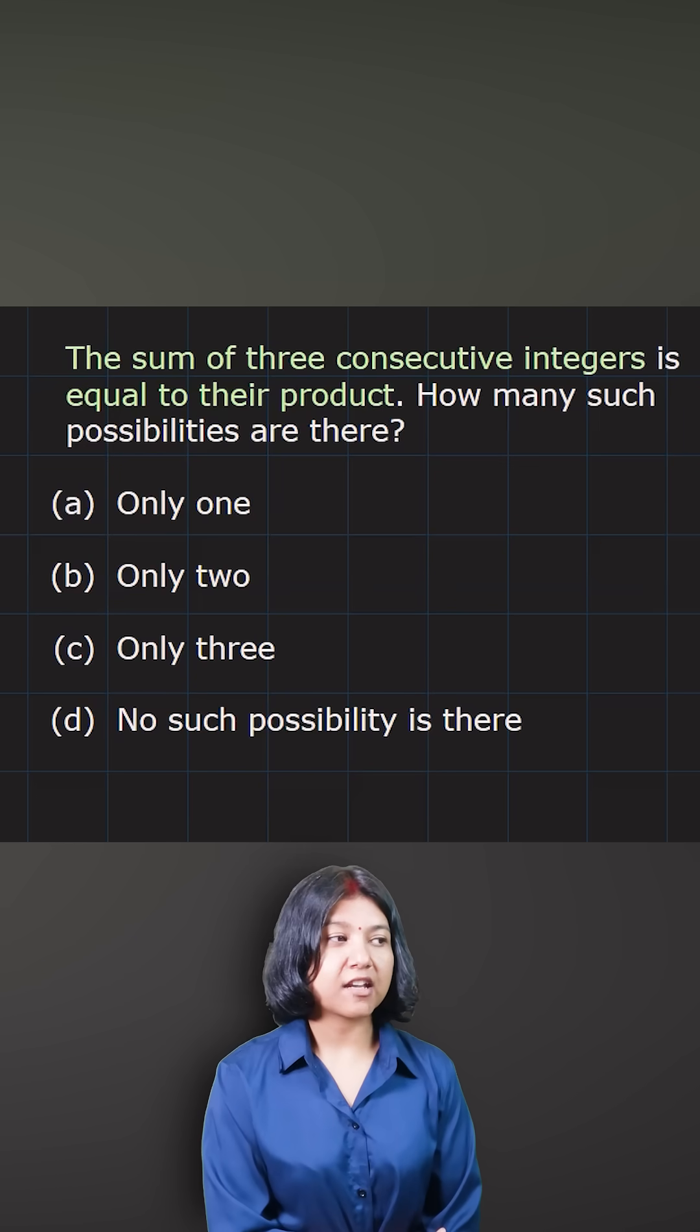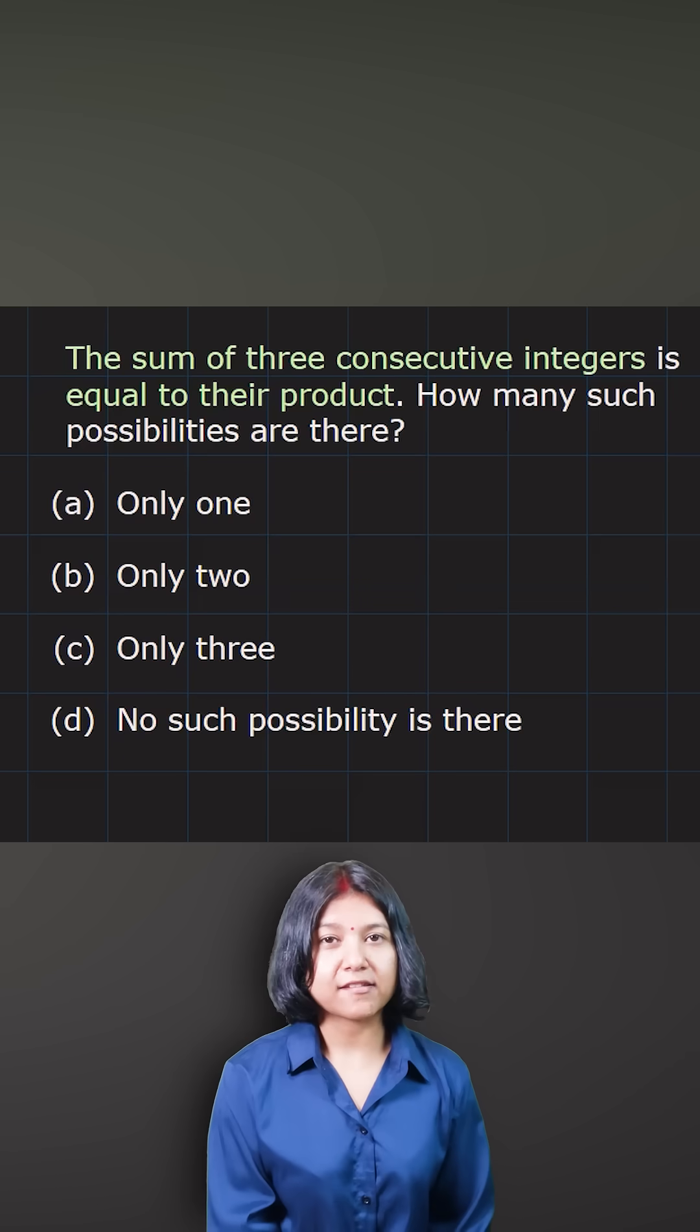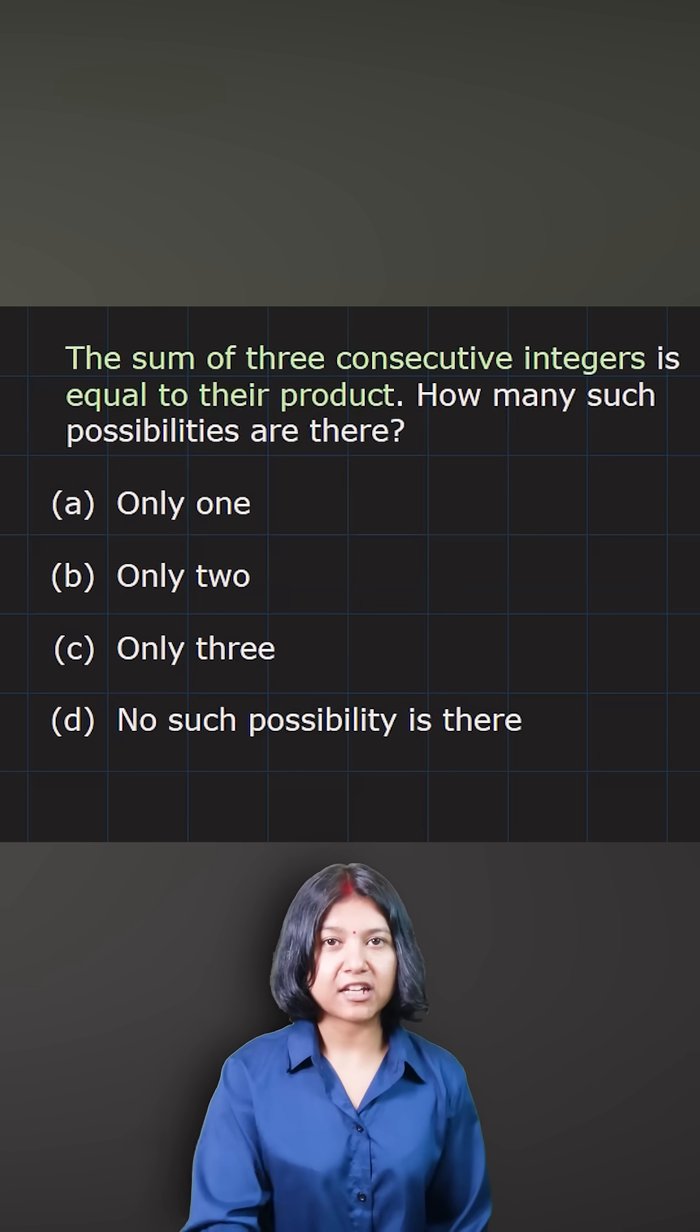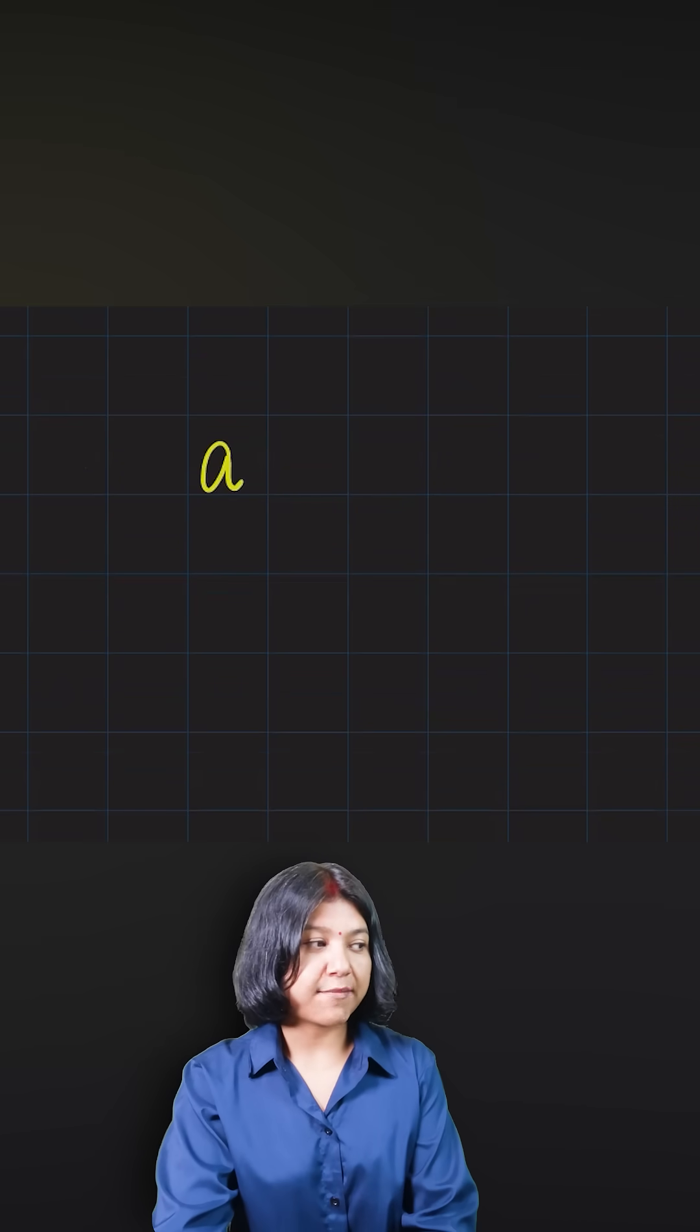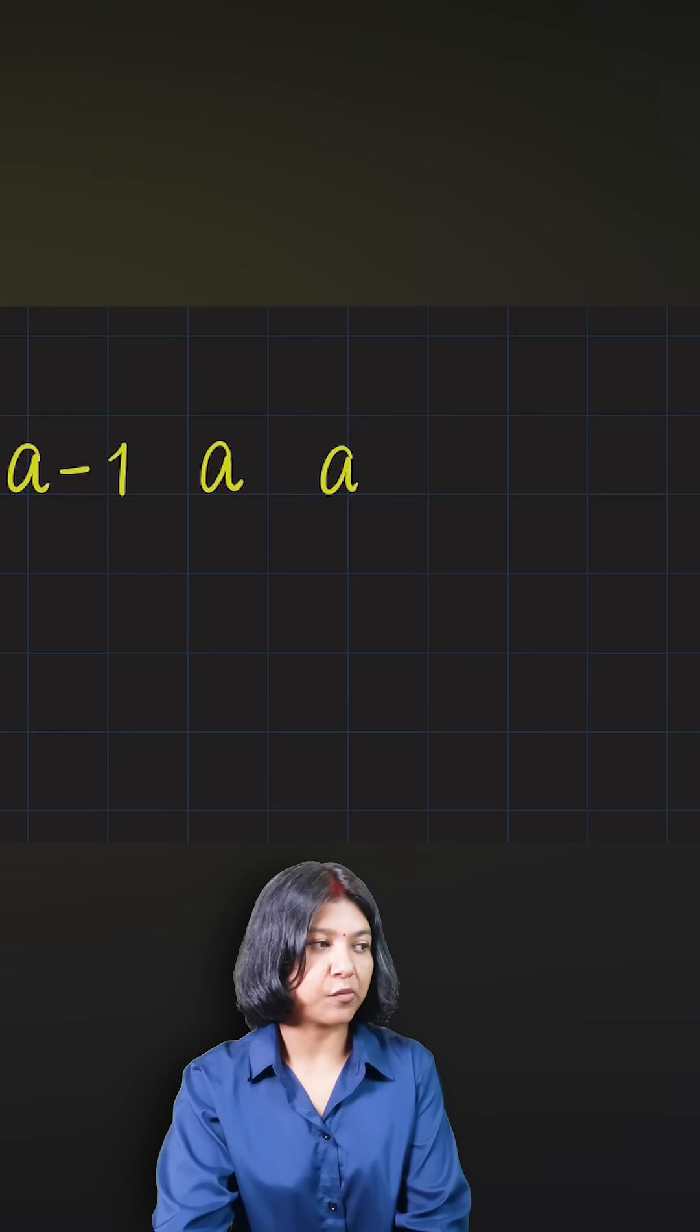You have been given the sum of three consecutive integers is equal to their product. In such cases when you have to consider three consecutive integers, the easiest way you can do is say the middle value is a, and what comes before this should be a minus one, and what comes after a would be a plus one.